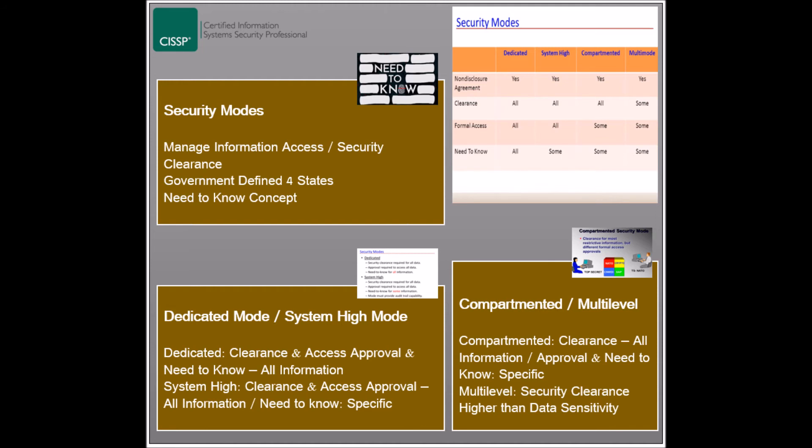The fourth and last security mode is the multi-level mode, where not all users have security clearances to access information. Access is granted if the user's security clearance level is higher than the information sensitivity level. Users must also obtain access approval for all the information they want to access, and must have a need to know.